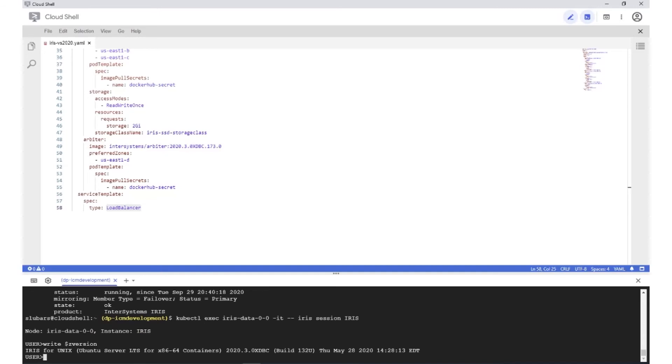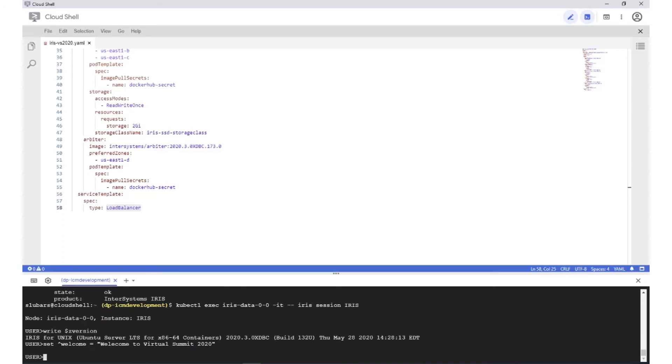While I'm in here, I'm going to set a global. And I'm doing this to show perhaps the most important feature of the stateful set, which is that our persistent data in the form of a persistent volume claim will survive the cycling of the container itself, which is about to happen when we upgrade to 2020.4. So we'll come back after the upgrade to see that that global was still intact.